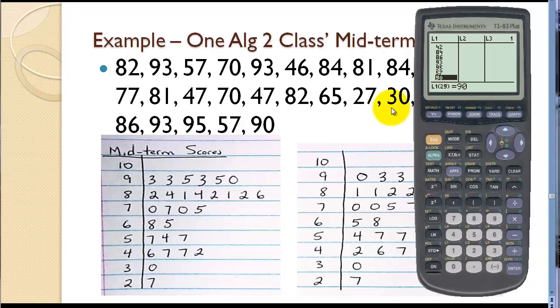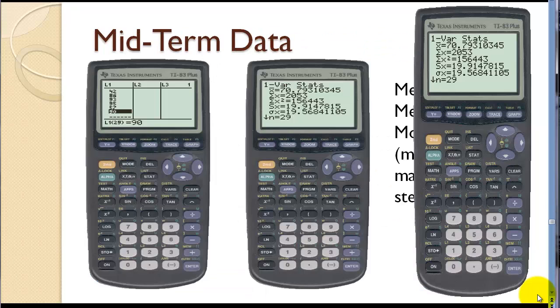Once we have the data entered to calculate those measures of central tendency and some other statistical measures, we're going to press the stat button and go to the calc menu, the calculation menu. These measures that we're doing, the measures of central tendency, are called one variable statistics. So we select that. That puts the command on our calculation screen and we press enter.